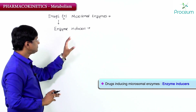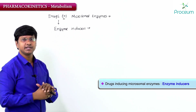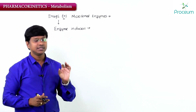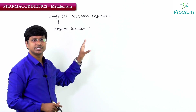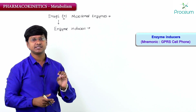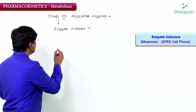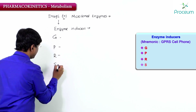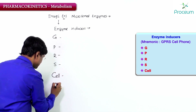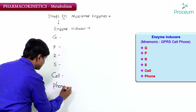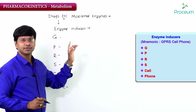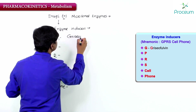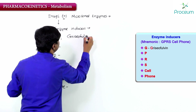The examples of enzyme inducers can be remembered using the mnemonic GPRS cell phone. So the mnemonic for enzyme inducers is GPRS cell phone.